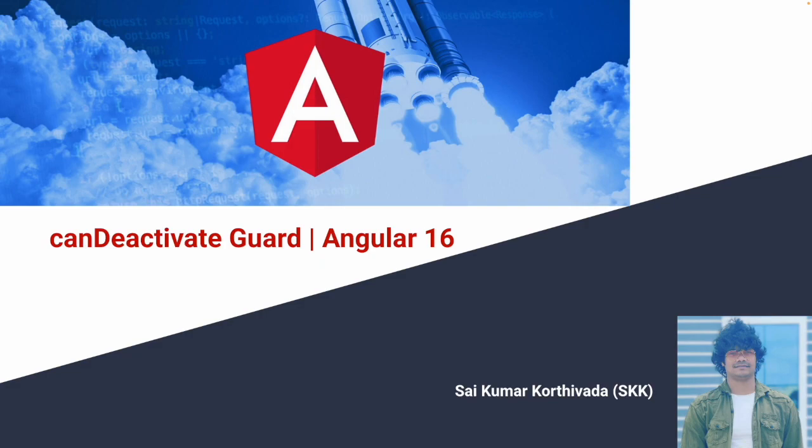So what is the purpose of canDeactivate? canDeactivate will help us whenever you are navigating back to a previous URL — the canDeactivate Guard will be called and you can execute certain logic there. In this video we will see two approaches: one is Functional Deactivate and Class Deactivate. Functional Deactivate is the newer approach of using canDeactivate; Class Deactivate is the previous usage.